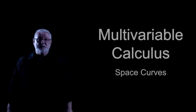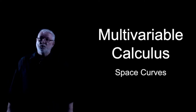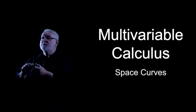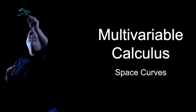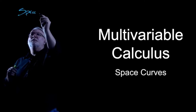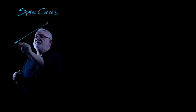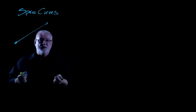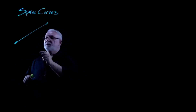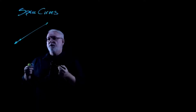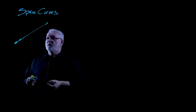Welcome back to our series on multivariable calculus. In this episode, we're going to talk about space curves. We've actually already seen an example of a space curve when we found the vector equation for a line in three dimensions. That vector equation wasn't quite in the correct form to be a space curve, so let's use it as our first example.